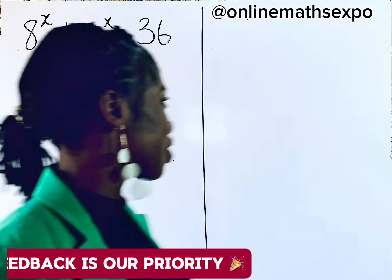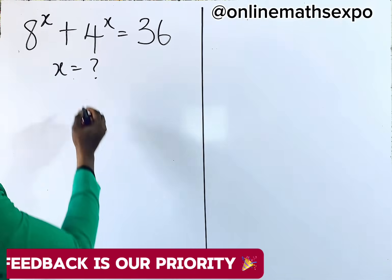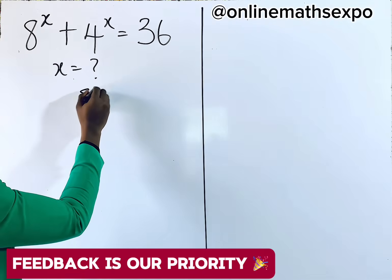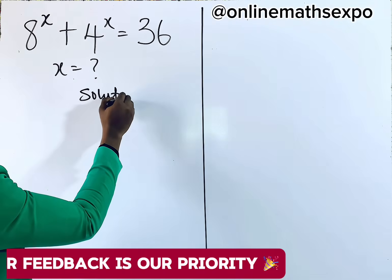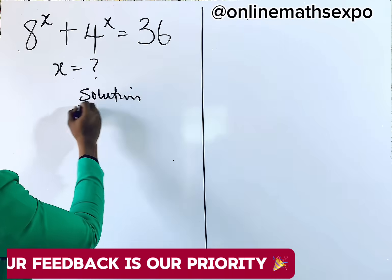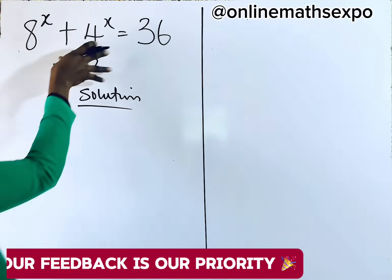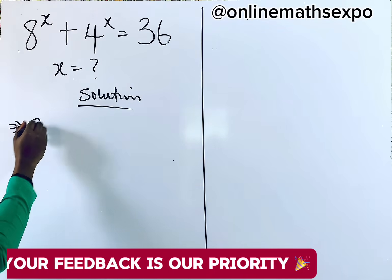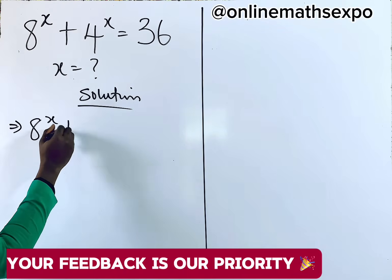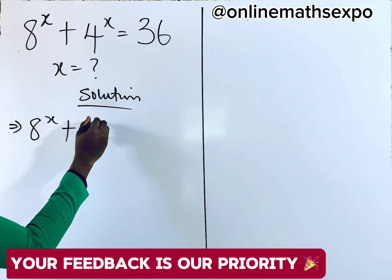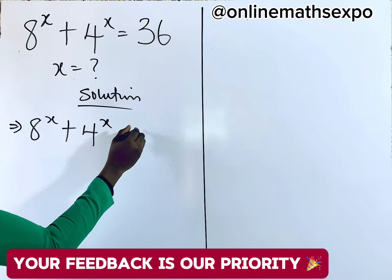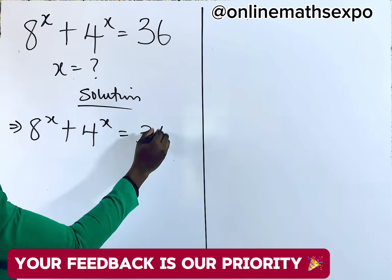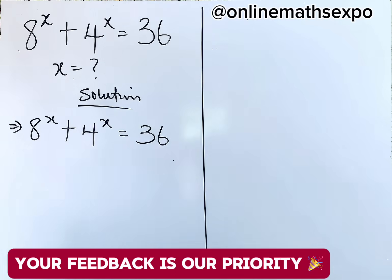Now to solve this, we're going to begin with the solution. So let's repeat what we have: 8 to the power of x plus 4 to the power of x is equal to 36. Now what should we do?